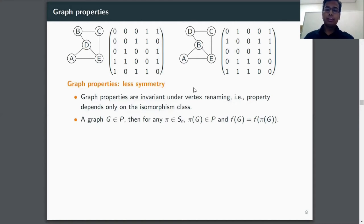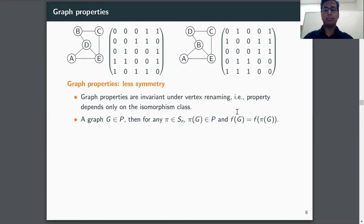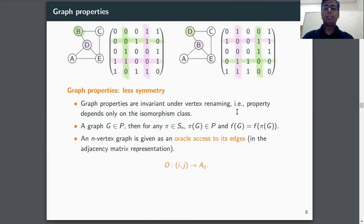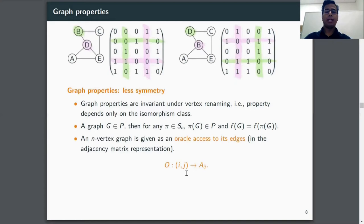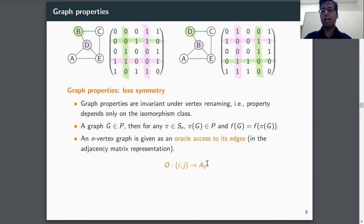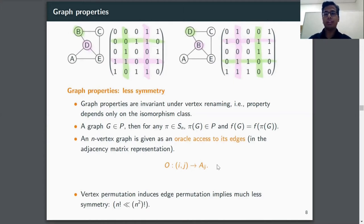Graph properties are invariant under vertex renaming — that is, the property depends only on the isomorphism class. Graph properties in the adjacency matrix model setting look like this: a graph G is in the property if we apply a permutation from S_n on the nodes (re-labeling them), then this re-labeled graph is also in the promise and the function is invariant under that re-labeling. So even though two vertices are re-labeled, all structural properties are still maintained even though the two adjacency matrices look different. From the oracle point of view, we query the entries of the adjacency matrix — we ask whether edge (i, j) is present — and the oracle returns the value a_{ij}.